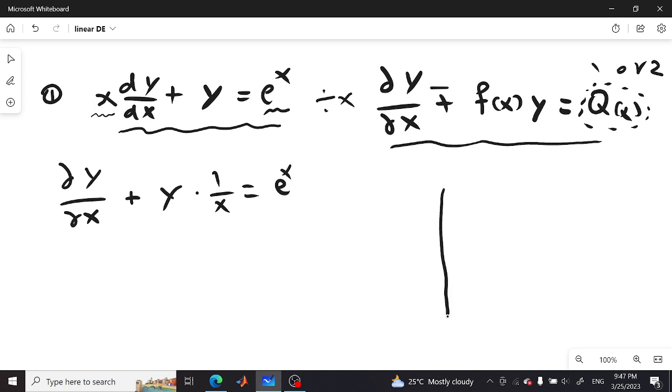Now we need to find the integration factor I(x), which equals e to the integral of the function that is multiplied by y, which is 1/x dx. Now we integrate this simple formula, we get ln(x). So our final answer would be x because ln cancels with the exponential.